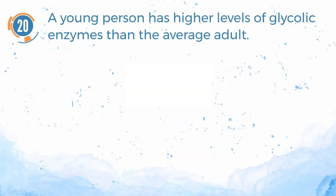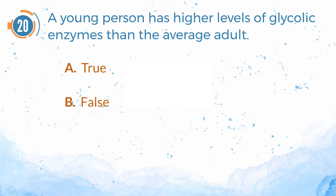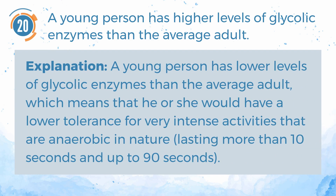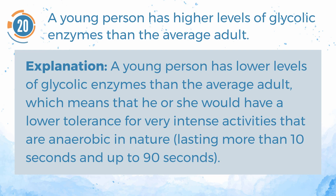Number 20. A young person has higher levels of glycolytic enzymes than the average adult. A. True. B. False. The answer is B. False. Explanation: a young person has lower levels of glycolytic enzymes than the average adult, which means he or she would have a lower tolerance for very intense activities that are anaerobic in nature, lasting more than 10 seconds and up to 90 seconds.